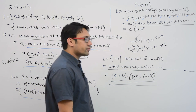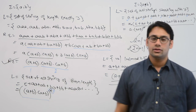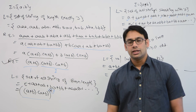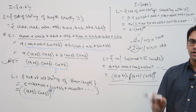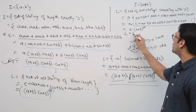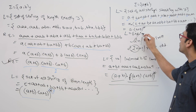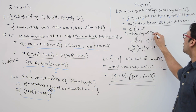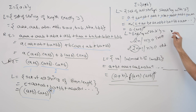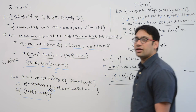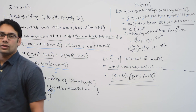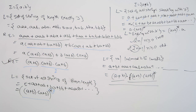Similarly, when strings are ending with 'a', any string can appear initially, but the last symbol must be 'a'. So the language of strings ending with 'a' is represented by (a+b)*·a, where (a+b)* allows any prefix and the final 'a' ensures the string ends with 'a'.